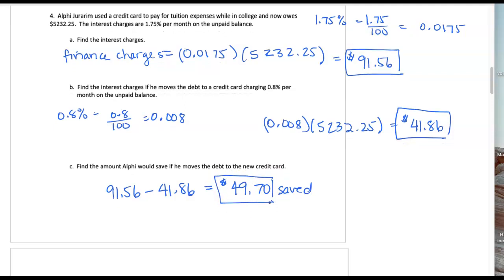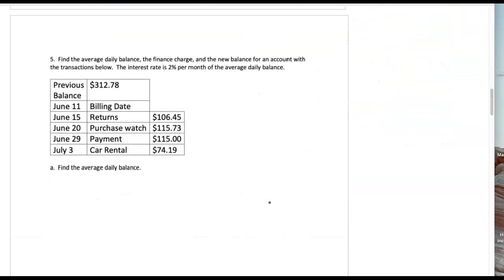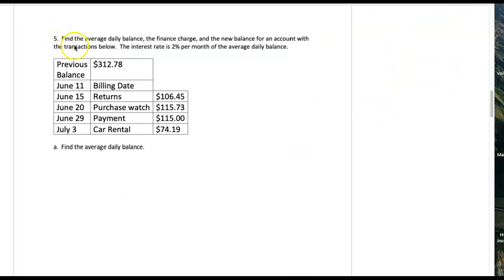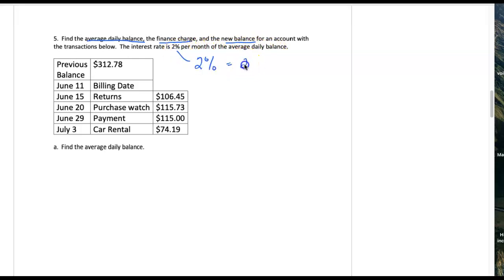Let's take a look at one more question — question number five. Find the average daily balance, calculate the finance charge, and calculate the new balance for an account with the transactions below. The interest rate is 2% per month of the average daily balance. Let's change 2% into its decimal equivalent right now and we get 0.02. So then later when we need that for the finance charge, we already have it.